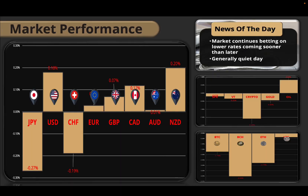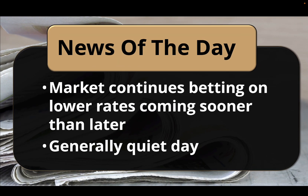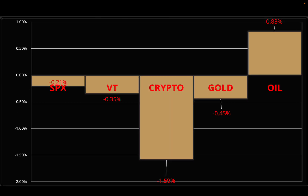Starting with broader market analysis: unemployment claims came in right around what was expected — it wasn't a market-shifting event. The market does seem to be continuing to bet on lower rates coming sooner rather than later. It was generally a quiet day. The Dow briefly touched 40,000 and then traded back down, and we can see the S&P down slightly on the day.